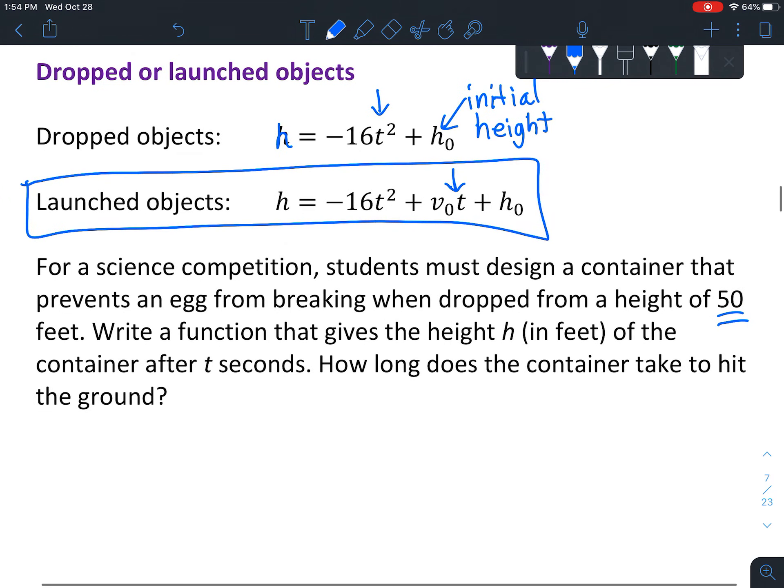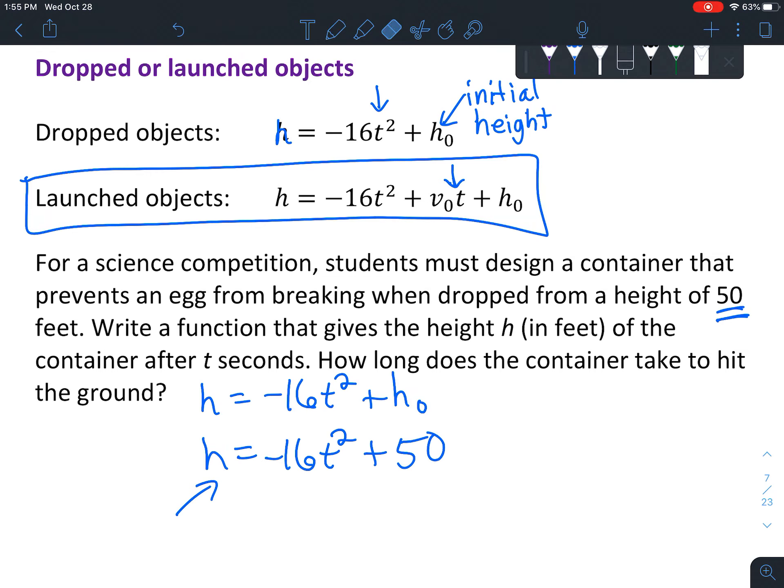So let's put our equation, and so we're going to say h equals negative 16t squared plus h naught. So what you're going to do is notice that it starts at 50 feet, and we'll just plug in the numbers that we know. So plus negative 16t squared, h equals, okay, so this is essentially the function that gives the height h in feet of the container after t seconds. So you plug in how many seconds it's falling, and it will tell you the height. So that's the answer to the first question already, just putting in that one little piece of information.